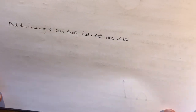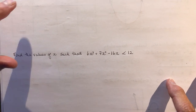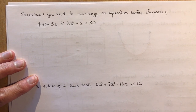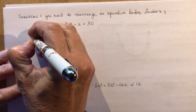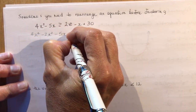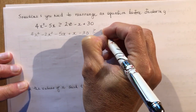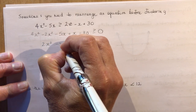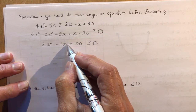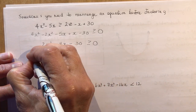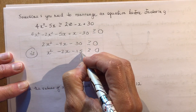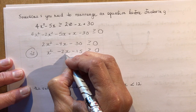Sometimes you need to rearrange an equation before factoring. Here I've got 4x² − 5x ≥ something, so I bring everything to one side first. Combining like terms gives 2x² − 4x − 30 ≥ 0. There's a common factor of 2, so dividing both sides by 2 gives x² − 2x − 15 ≥ 0.